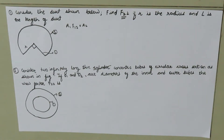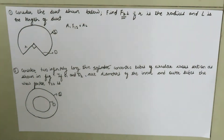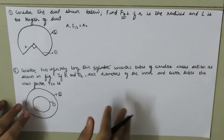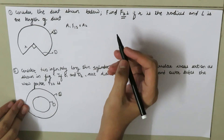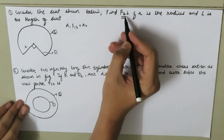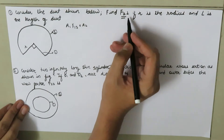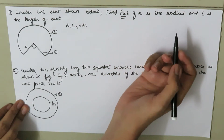Today we will learn how to find the view factor, which is also called the shape factor, in the case of simple geometries. Here we have a first question: consider the duct shown below and find F₂₂, which means the fraction of the radiation energy emitted by surface 2 which falls on surface 2 itself, where R is the radius and L is the length of the duct.